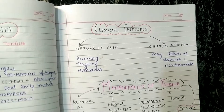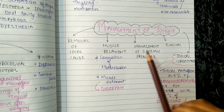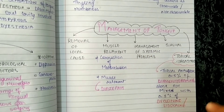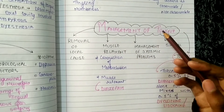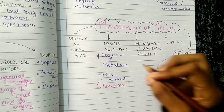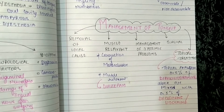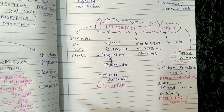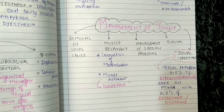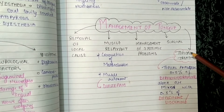For management, firstly we will remove the local cause. If glossodynia is related to muscles, we will give muscle relaxants such as diazepam. If the pain is due to malocclusion, we will do correction of malocclusion. We must also manage any underlying systemic problems — if a systemic condition is present, it must be treated first.